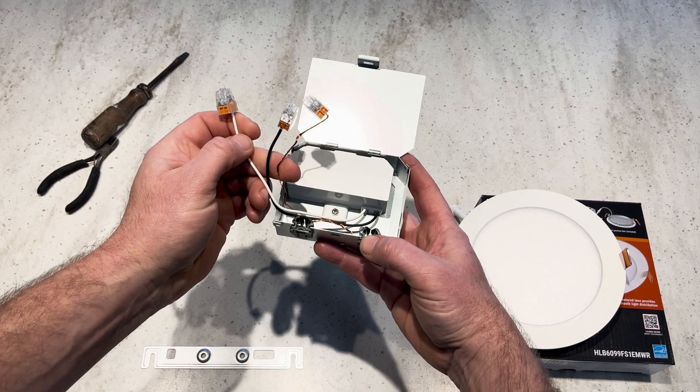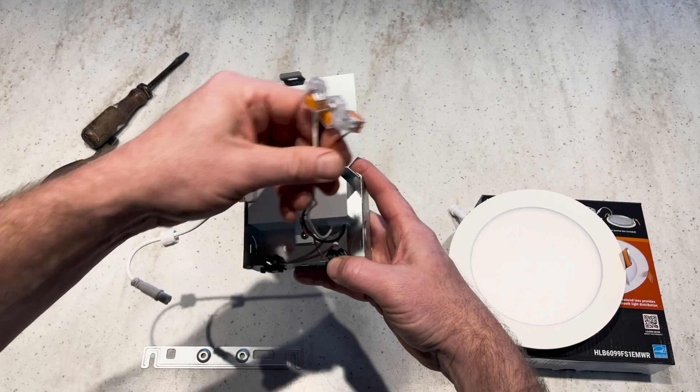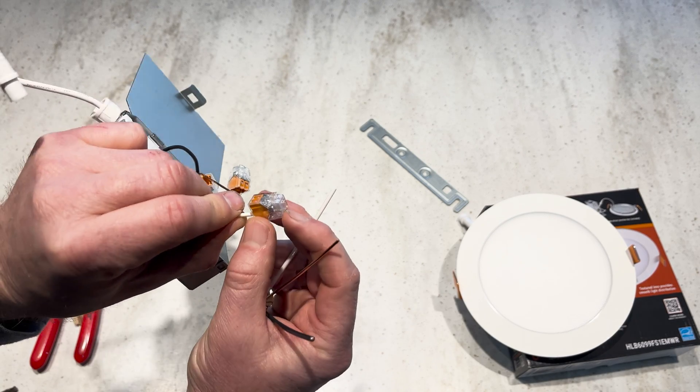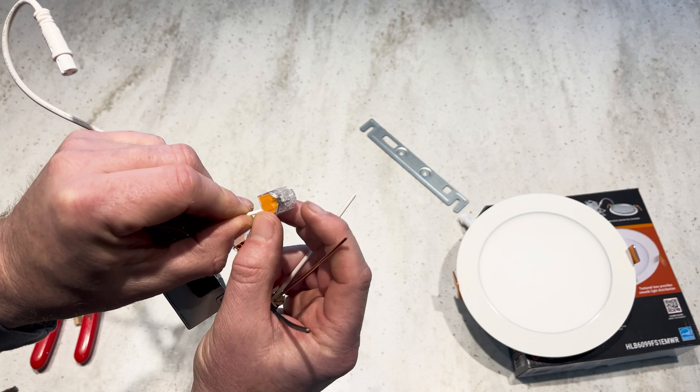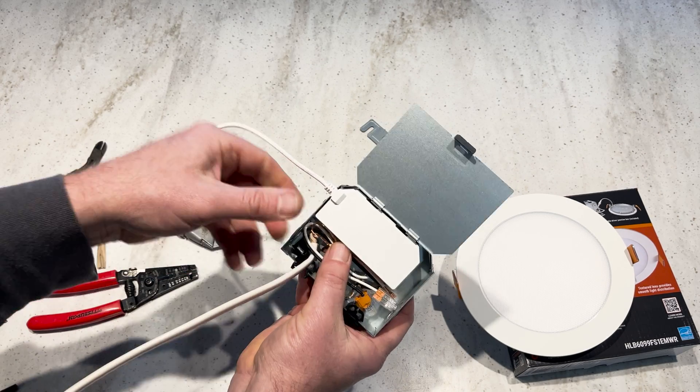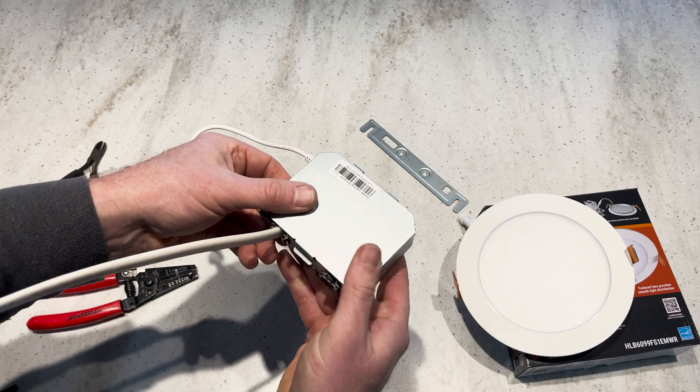Something that I love about this Halo light is that it comes with push-in wire connectors, making it super easy. The connectors are already linked to the wires coming from the light and they have three other positions that you can use for additional wiring. After pushing in my wires and making sure they're not going anywhere, I just close up the junction box.